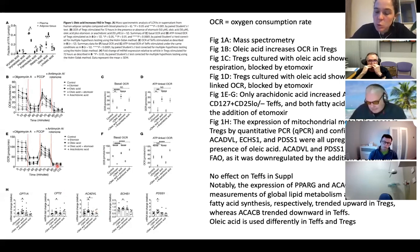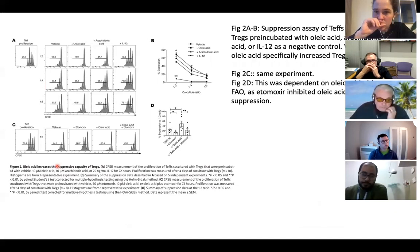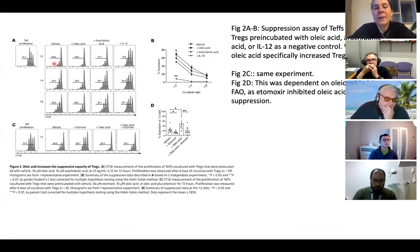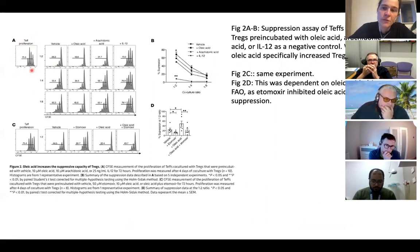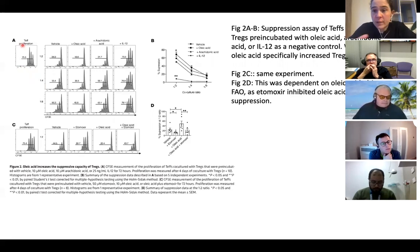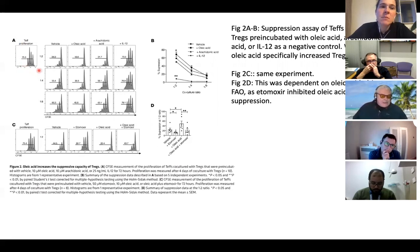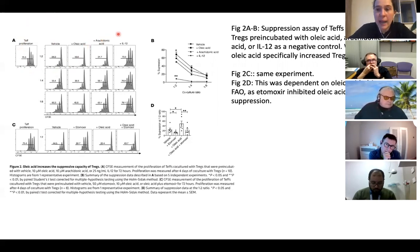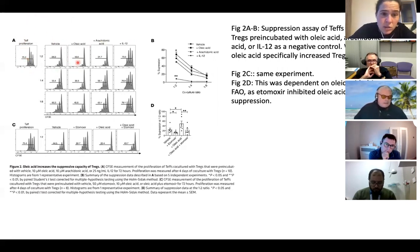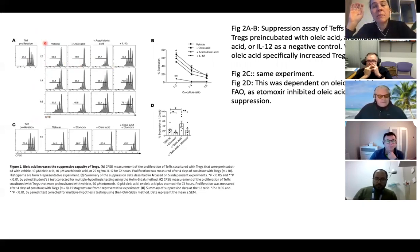In a second set of experiments, they performed suppression assays co-culturing effector T cells with regulatory T cells. The histogram reflects suppressive efficacy — the lower the histogram, the more suppressive the effect. They co-cultured cells with nothing, oleic acid, arachidonic acid, or IL-12 as a negative control, finding that oleic acid addition produced the biggest suppressive effect.